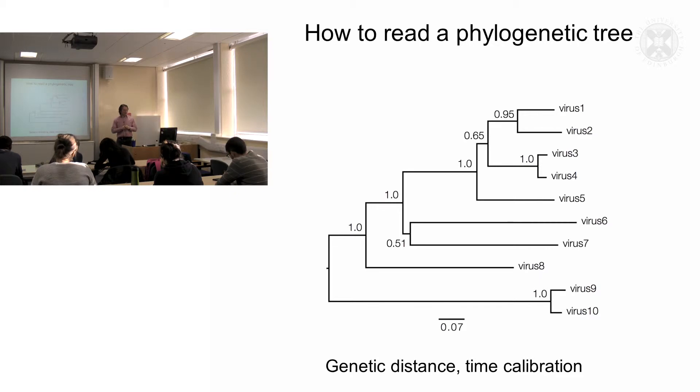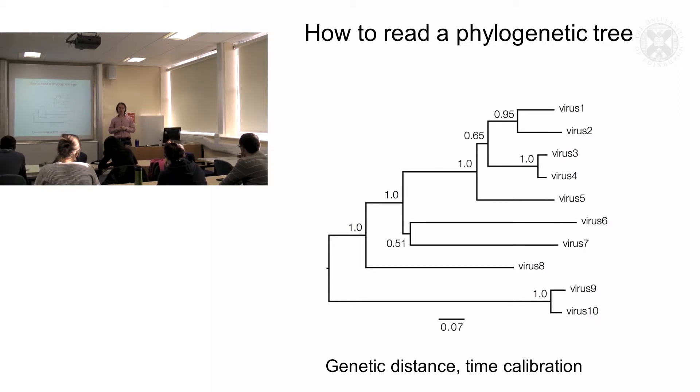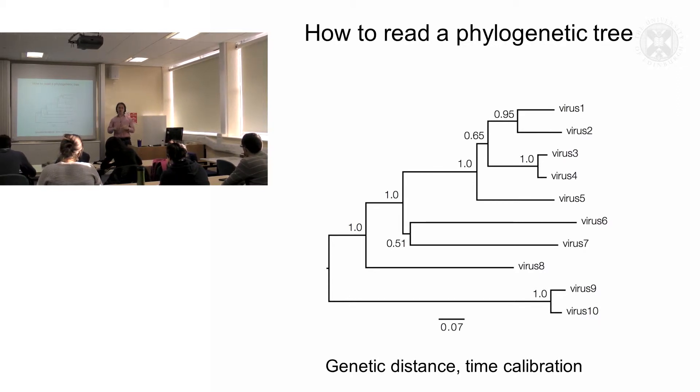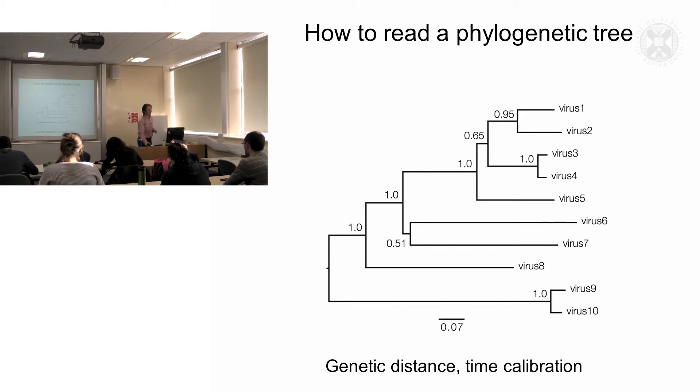But in order to be able to calibrate the tree, in order to put a time frame on it, we would need to have a sense of the rate of mutation that had occurred across the phylogenetic tree. So we need to have an estimate of the mutation rate. But overall the length of the branches is approximate to the length of time since divergence.